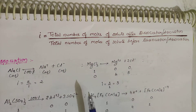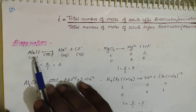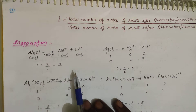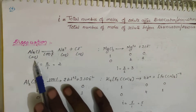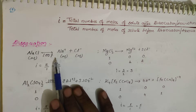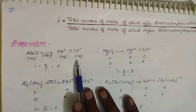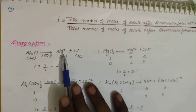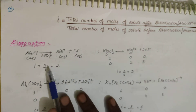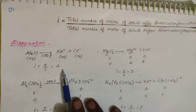Let's first consider 100% dissociation. For NaCl: initially 1 mole, after complete dissociation we get 1 mole Na⁺ and 1 mole Cl⁻ — total 2 moles. So i = 2/1 = 2.